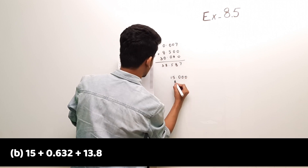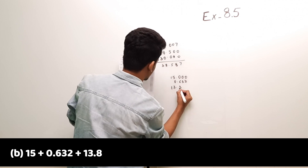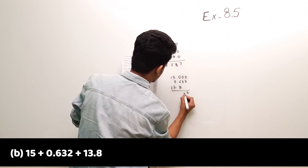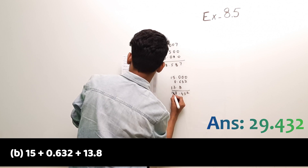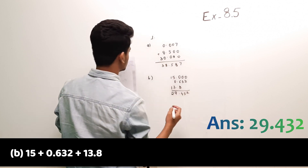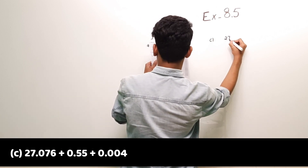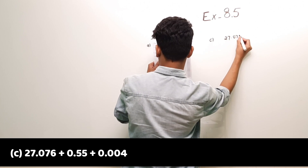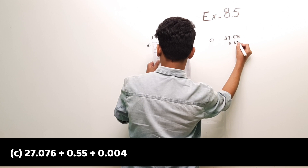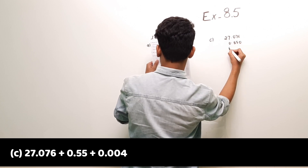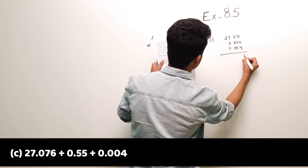Part (b): 15 plus 0.632 plus 13.8. The answer is 29.432.